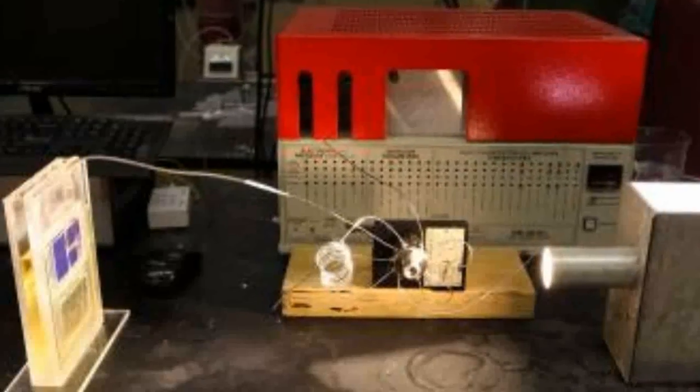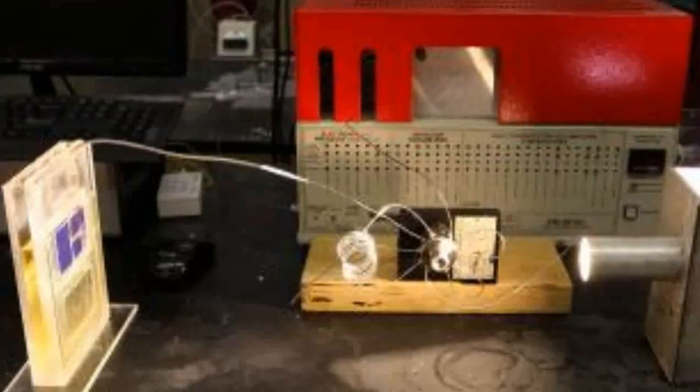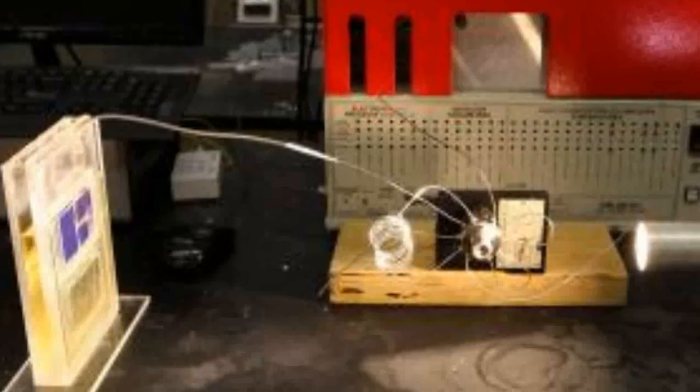While plants produce fuel in the form of sugar, the artificial leaf delivers syngas or synthetic gas, a mixture of hydrogen gas and carbon monoxide. Syngas can be burned directly or converted into diesel or other hydrocarbon fuels.